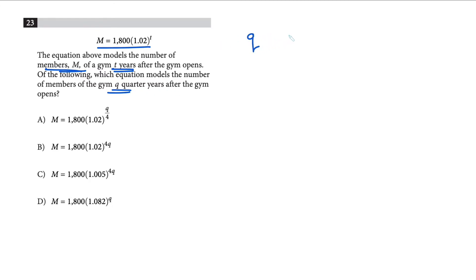Q quarter years means after q quarters. For example, four quarters means one year, and eight quarters means two years.